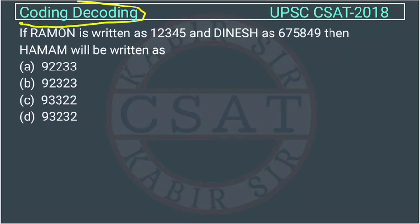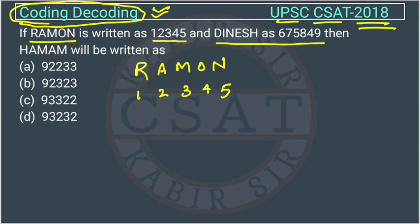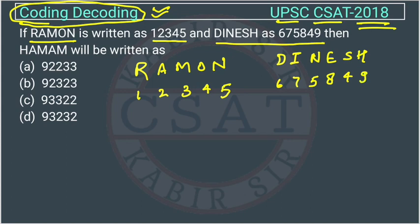This is a question of reasoning from the chapter coding and decoding, asked in the UPSC and CSET paper of 2018. The word RAMON is written as 1, 2, 3, 4, 5 — that is, R-A-M-O-N is coded as first, second, third, fourth, fifth. Another word DINESH, written as D-I-N-E-S-H, is coded as 6, 7, 5, 8, 4, 9.